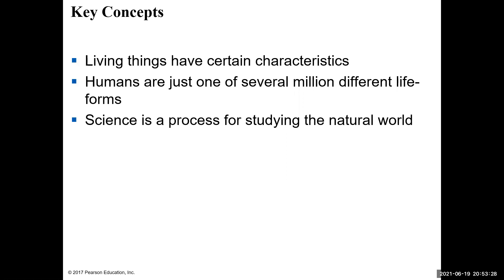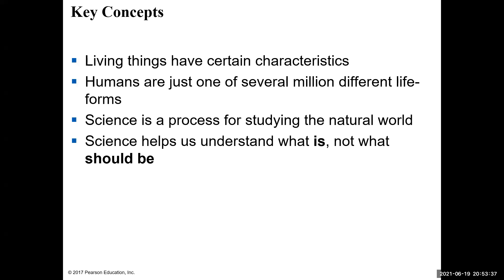Science is where we study the natural world, and science is there to help us understand what is. Science is not there to tell us how things should be. So if you hear anybody say 'science says this should be like this,' that's not how science should be used. Science should be used to critically analyze and understand processes happening in the natural world — how they work, how they function, and how they all communicate together. We can make choices and critically think about information given to us from the scientific community.